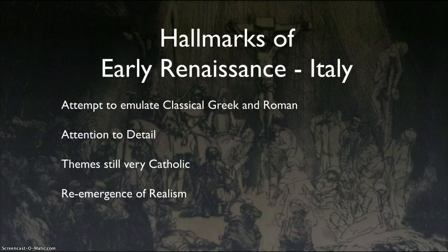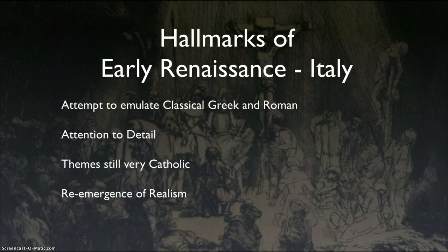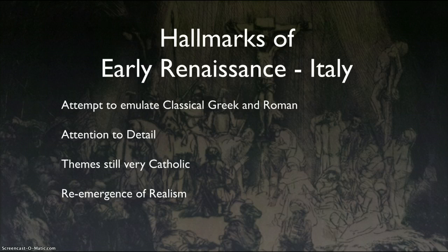Hello everyone, this is Professor Todd Giles and we're continuing with the early Renaissance. This time we're down in Italy, and some of the hallmarks to look for is artwork that is again trying to emulate classical Greek and Roman art and architecture. It's sort of like Romanesque except on steroids — they really are exploring and working with those themes and details of the classical artists. They can see the remnants of the Roman Empire, so they're trying to get back to detail and realism.